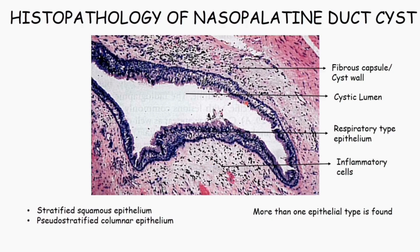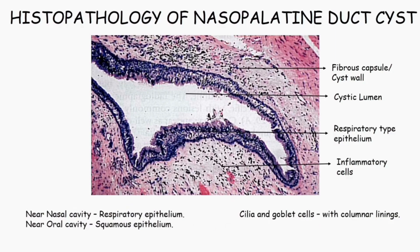The lining epithelium of the nasopalatine duct cyst differs. It can be stratified squamous epithelium or pseudostratified columnar epithelium. Usually, more than one type of epithelium is seen in one cyst. Stratified squamous epithelium is the most common, and pseudostratified columnar epithelium is the second most common. Cilia and goblet cells can be seen with columnar linings.